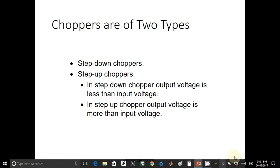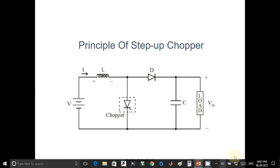One is step-down chopper and another is step-up chopper. In case of step-up chopper, output voltage is more than that of input voltage. This is the circuit diagram for step-up chopper. In this circuit, we are having input voltage V, inductor L, chopper switch, diode D, capacitor C and load.